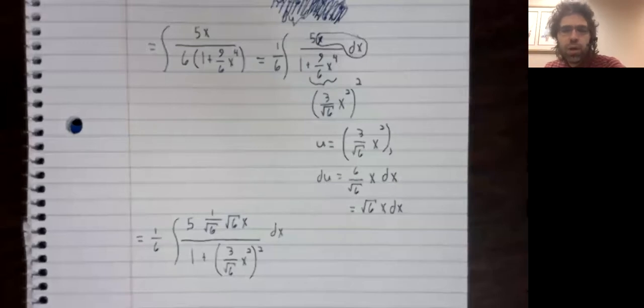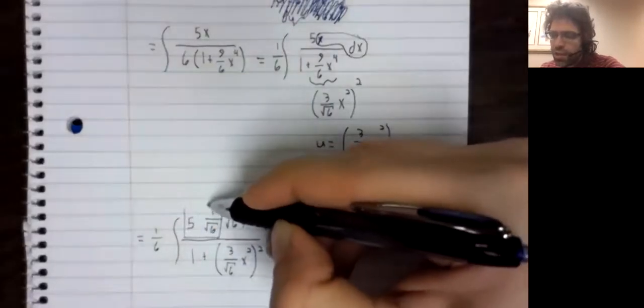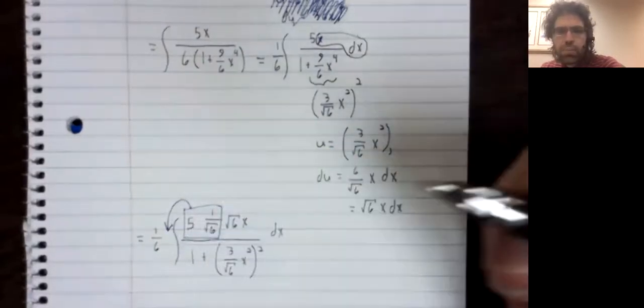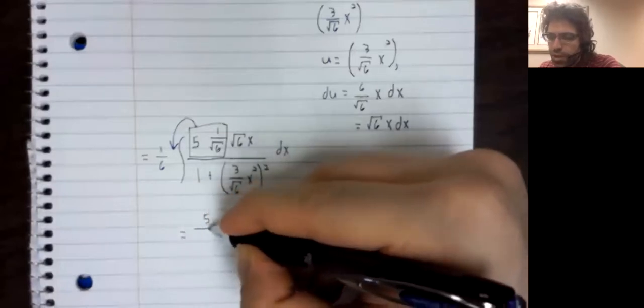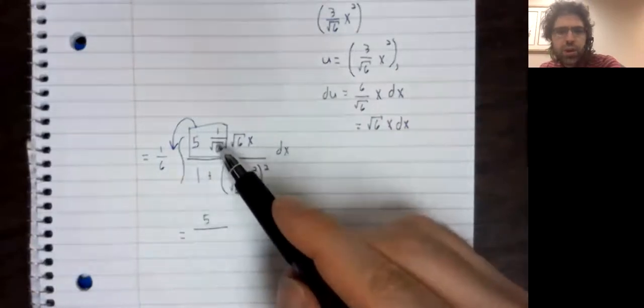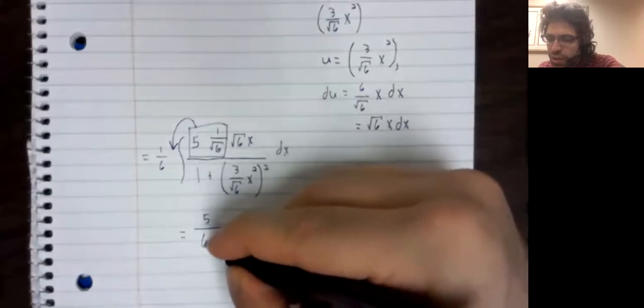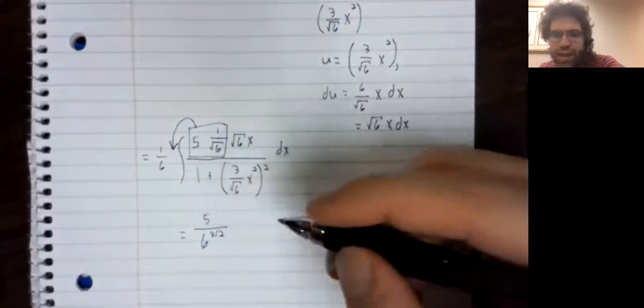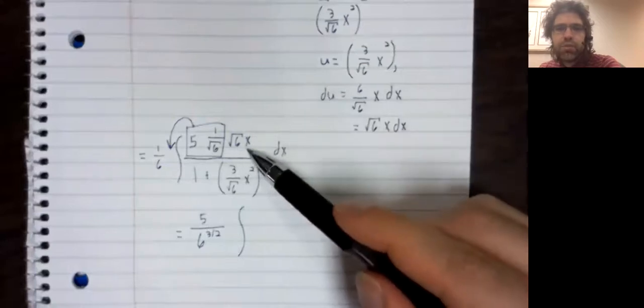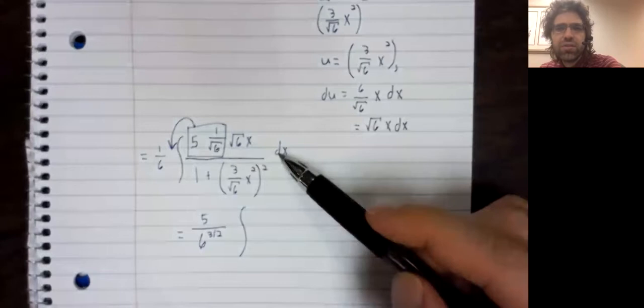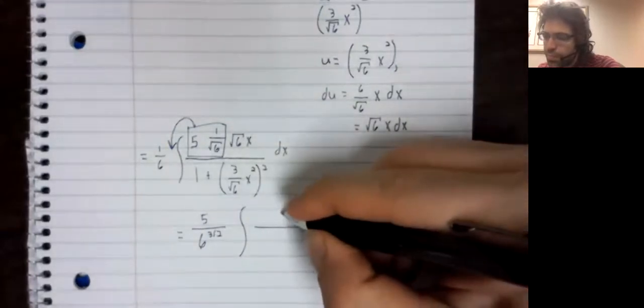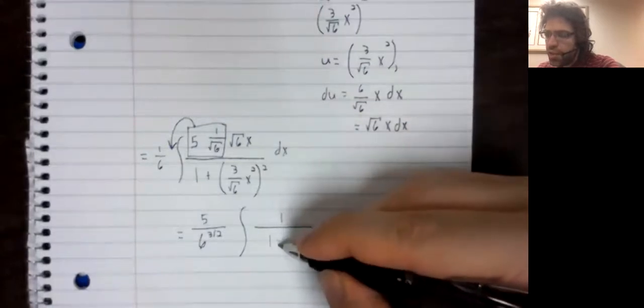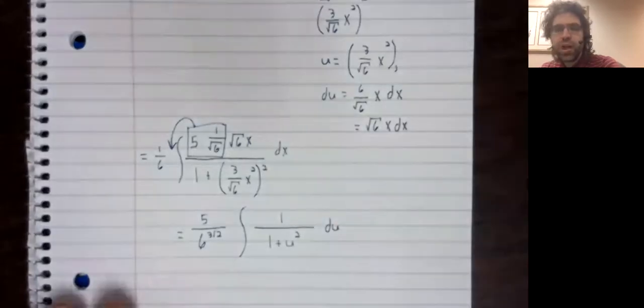So we have this quantity squared. But now we're almost to the end. Everything we don't want, that is to say these constants, will just come out of the integral. Let's see. 1 over 6 times 1 over the square root of 6 is 1 over 6 to the 3 halves power. The square root of 6 x dx is precisely du. In the denominator, that's 1 plus u squared.